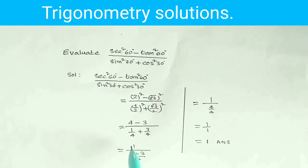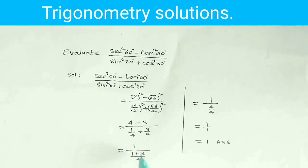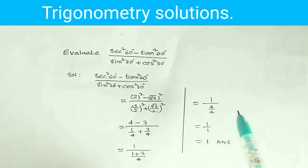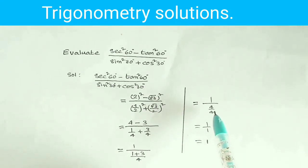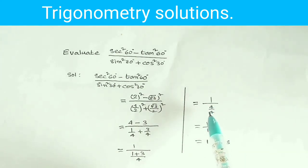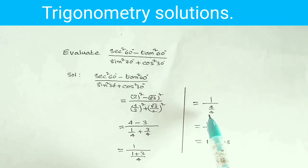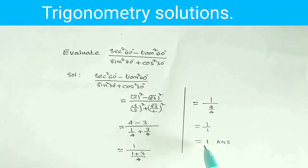4 minus 3 is 1. 1 by 4 plus 3 by 4: LCM is 4, numerator 1 plus 3 is 4, so denominator is 4 by 4, which equals 1. Therefore the answer is 1 by 1, which is equal to 1.